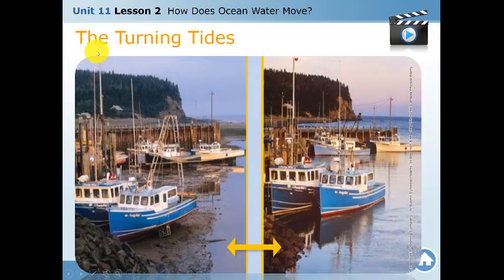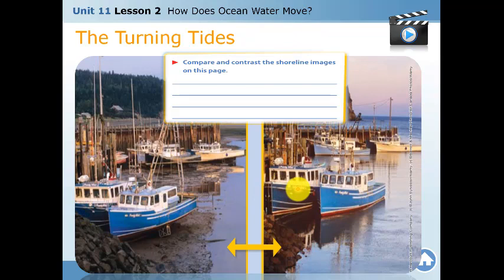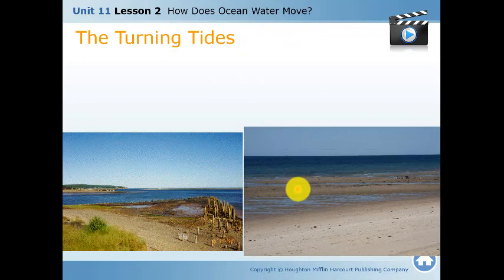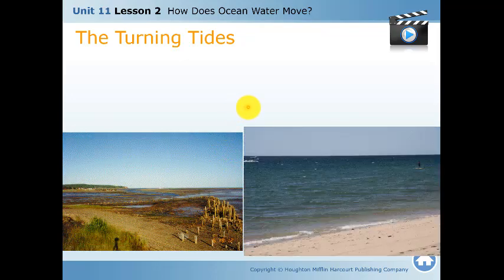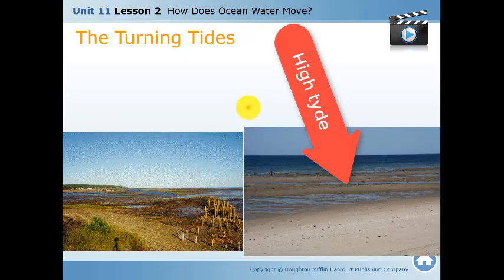Go to page 510: Turning Tides. Looking at this picture, you can see the difference between a low tide and a high tide. The turning tides show the change from the highest to the lowest tide. Comparing the shoreline images on this page — in one image it is the same location at high tide and another at low tide.